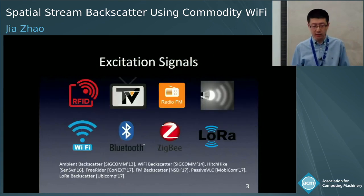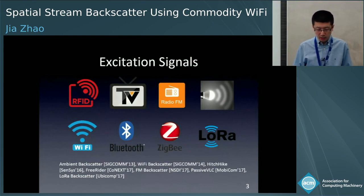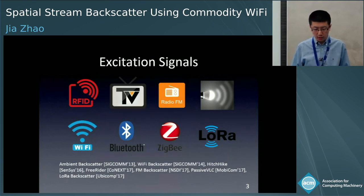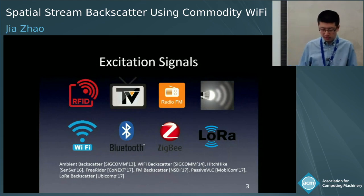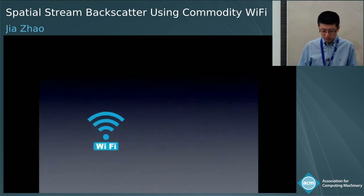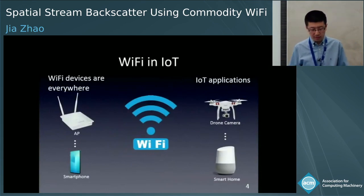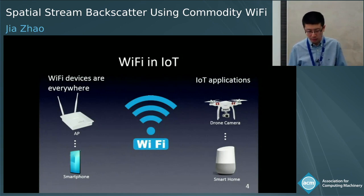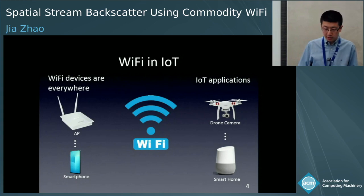Besides using dedicated excitation like RFID devices, recent studies have demonstrated that excitation signals can be wireless TV, FM radio, visible light, Wi-Fi, Bluetooth, ZigBee, and LoRa. In particular, when we look at Wi-Fi, we find that we not only have Wi-Fi devices everywhere, but have also used it as the connection solution for many IoT products. It's clear we already have Wi-Fi signals surrounding us at home, in the office, and other indoor environments.